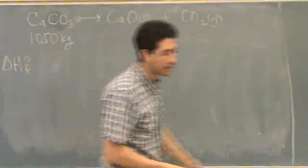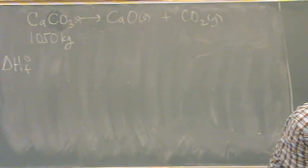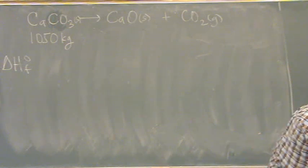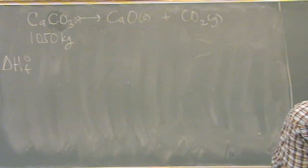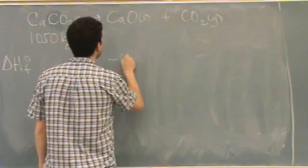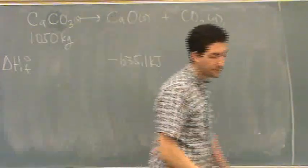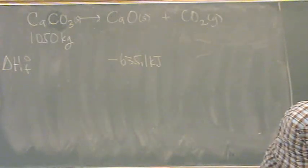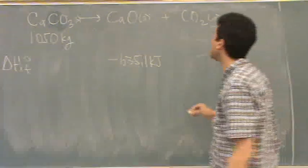So I look these things up in the back. Let's see if I can find them. CaO should be minus 635.1, where is it, minus 635.1 kilojoules. Where is the other one, CO2 minus 393.5.